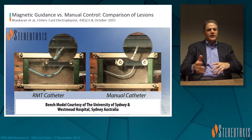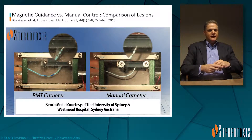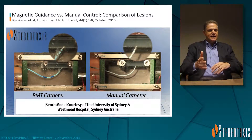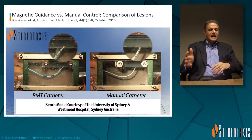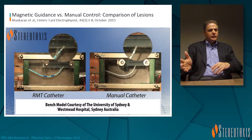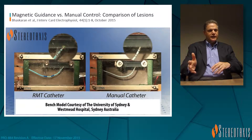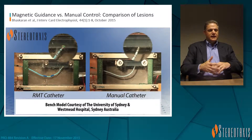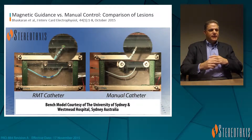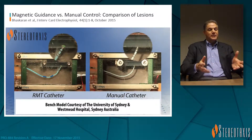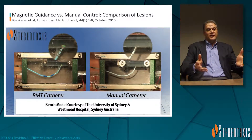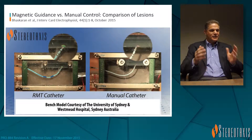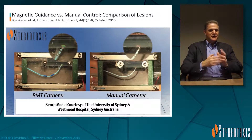As the video plays, you can see that the manual catheter on the right does appear to stay in contact, but then it's sliding back and forth on the surface, while the RMT catheter is really stuck in place. In a lot of ways this reminds me of what it looks like to work with a cryo ablation catheter — where you start to freeze and you're kind of stuck there.